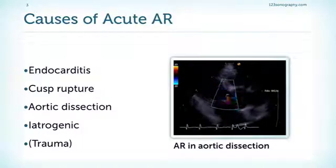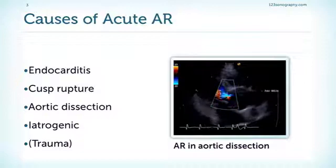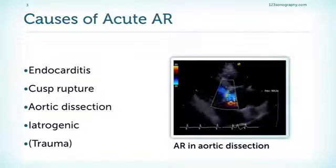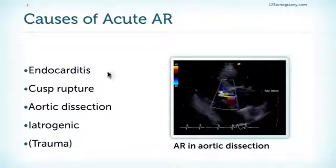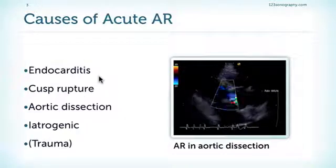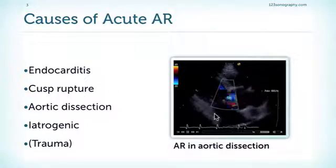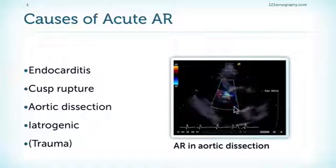Probably the most common cause of acute aortic regurgitation is endocarditis. Another reason is cusp rupture, which can be caused by endocarditis again, and aortic dissection. This is such an example.